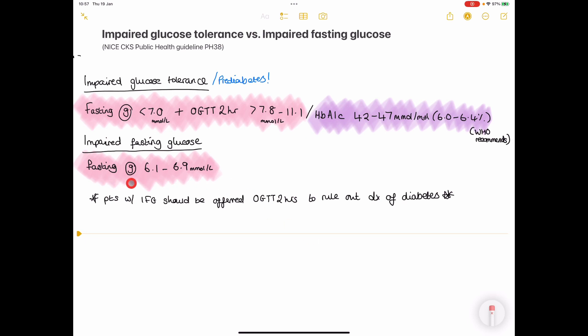If the fasting blood glucose comes back at 6.1 to 6.9, so it's not more than 7, the patient has a diagnosis of impaired fasting glucose.